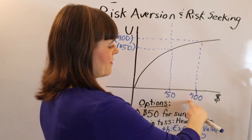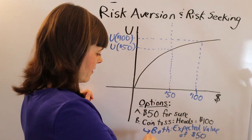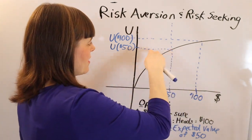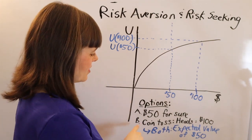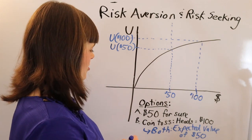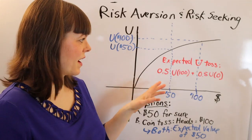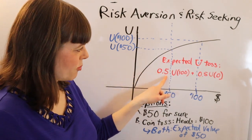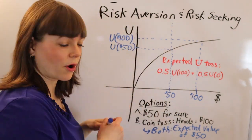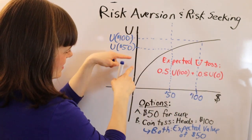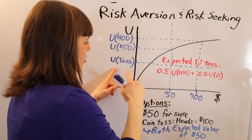The utility of getting $100 is represented on the utility function map. Here we have the expected value of $50, which is the same for both options. When we look at the utility of having $50 for sure, we want to compare that to the utility for the bet — the coin toss. To do that, we calculate the expected utility of that coin toss, which is going to be 0.5 times the utility of $100, plus 0.5 times the utility of $0, which is just 0. So graphically, the expected utility of the coin toss is exactly halfway between these two points, and we project it over.